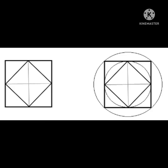Baudhayana also tried to find a circle whose area is the same as that of a square. He said: draw half its diagonal about the center towards the east-west line, then describe a circle together with a third part of that which lies outside the square.